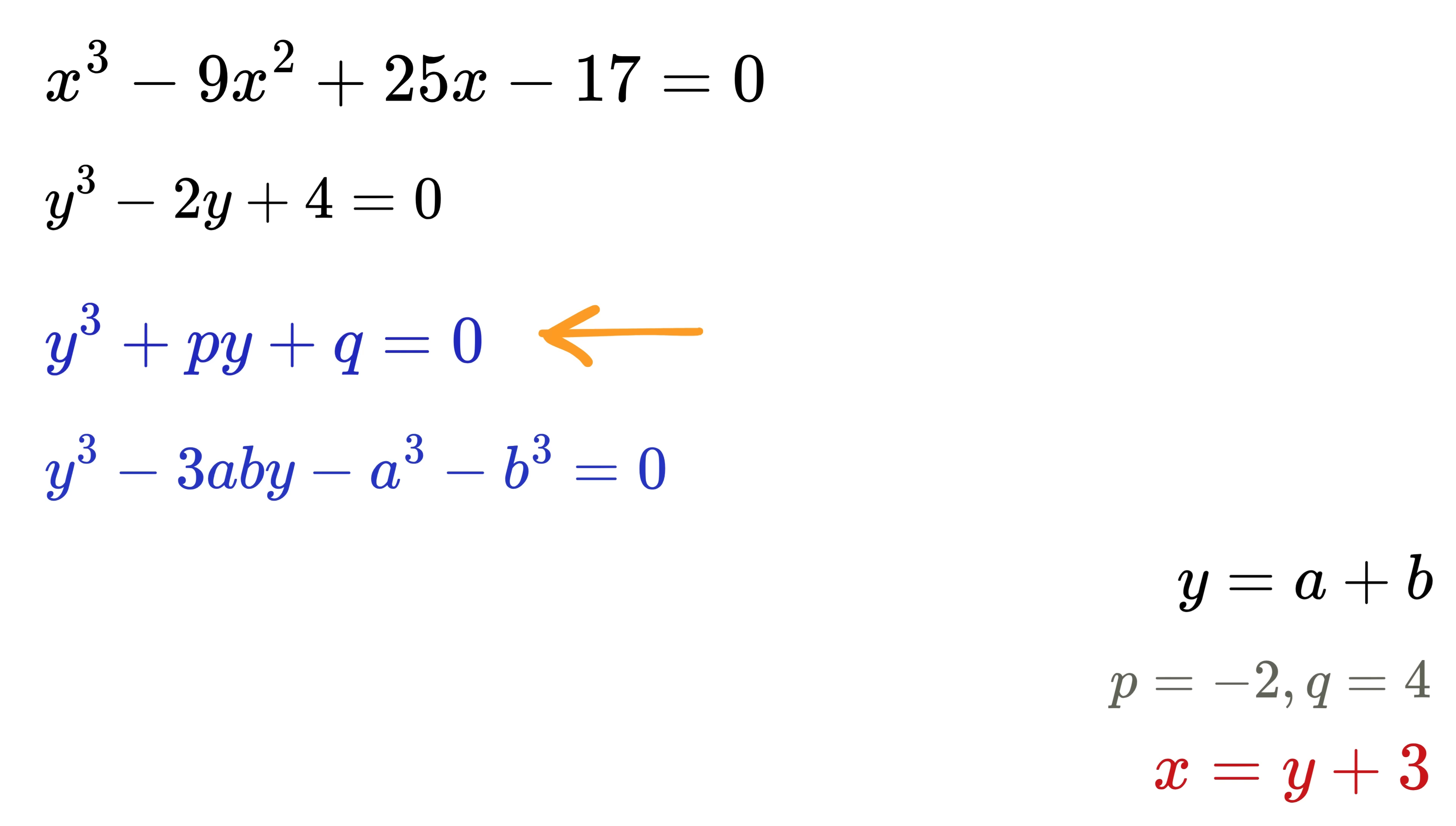On the other hand, we have this depressed cubic. Now just match the terms. From here we get that p is actually equal to -3ab, and q is equal to -(a³ + b³), or a³ + b³ = -q.